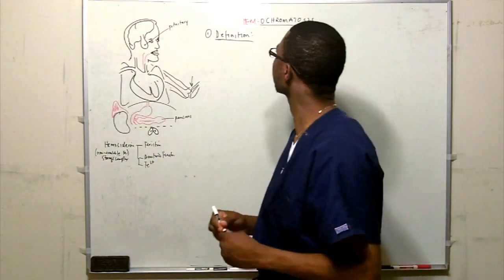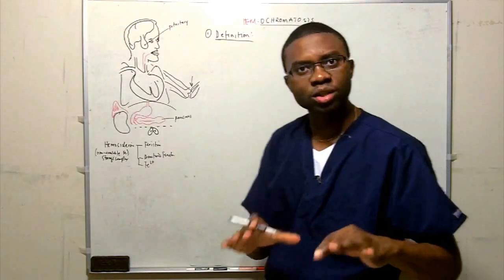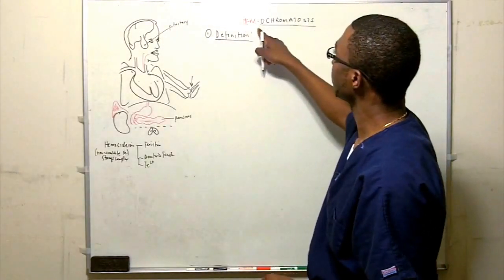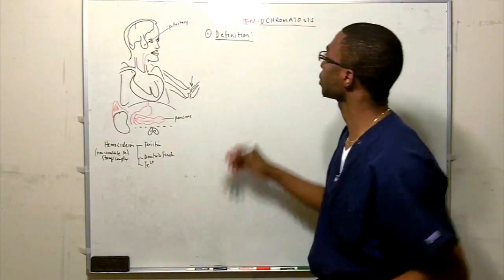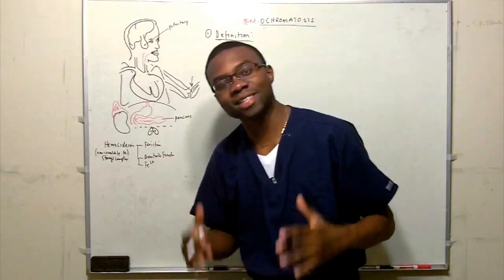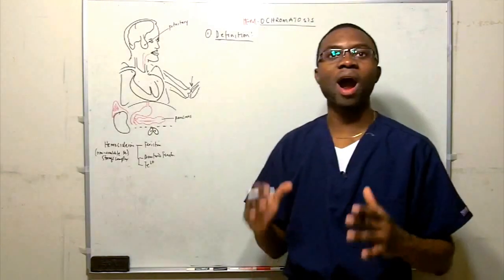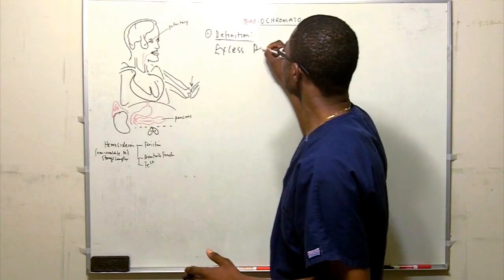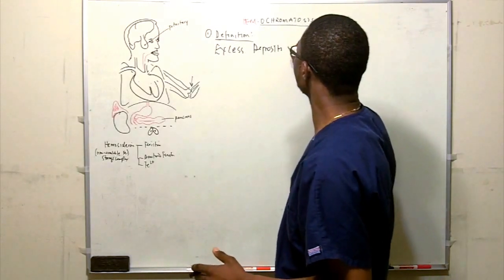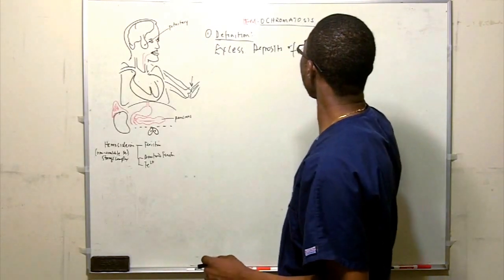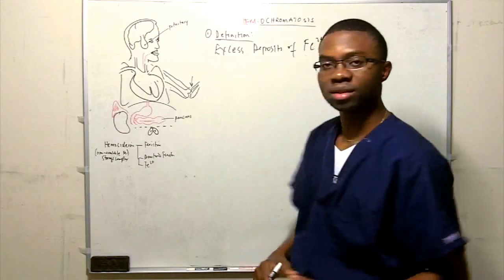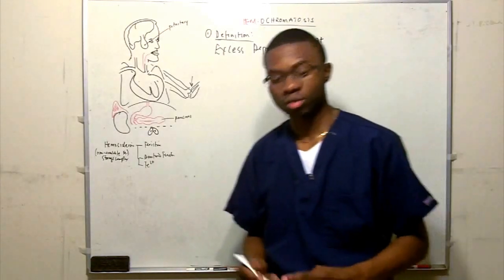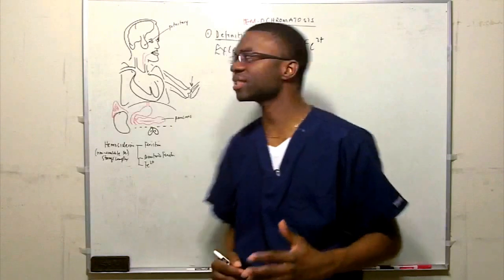What is hemochromatosis? We break words into pieces: heme-o-chromatosis. It's the excess deposition of iron — excess deposits of iron in the body where it's not supposed to be.